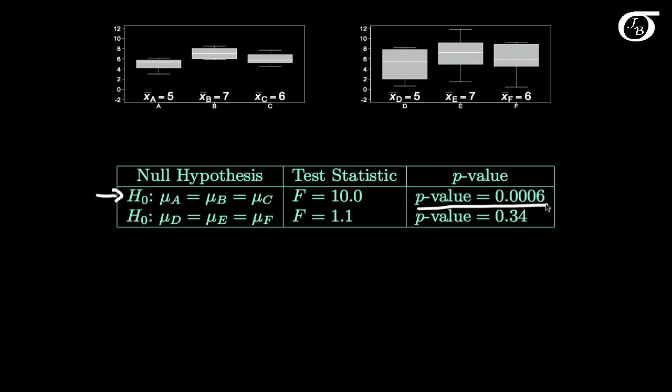we should be able to see here that for this null hypothesis that μA and μB and μC are equal, or in other words that these three samples come from three populations that all have the same population mean, the p-value is very very small over here. So there is very strong evidence against this null hypothesis. We'll see this test statistic is an F test statistic, and that F test statistic is going to help us get this p-value.